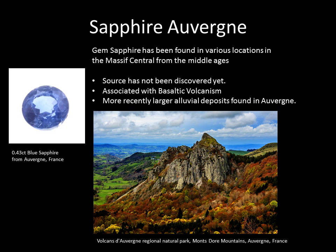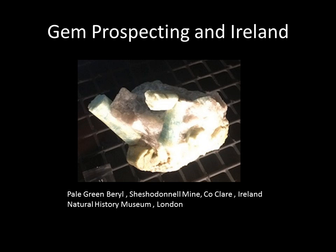Last of the main deposits: sapphires from Auvergne in the Massif Central, France — a gem deposit known since the Middle Ages. The actual source hasn't been discovered yet but it's associated with basaltic volcanism. More recently, a large alluvial deposit was found in Auvergne and you can buy sapphires from this deposit on eBay — many are quite beautiful, though generally less than a carat. This will be interesting for future development, but it's a natural park so large-scale prospecting or heavy equipment is not permitted.